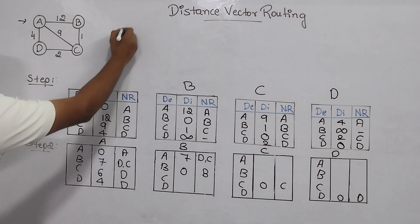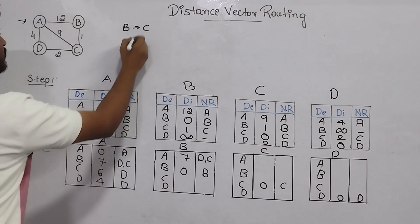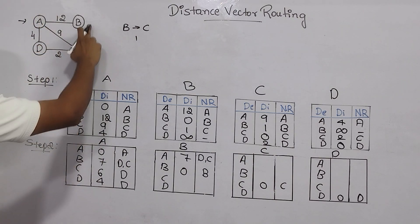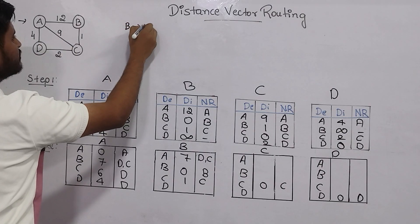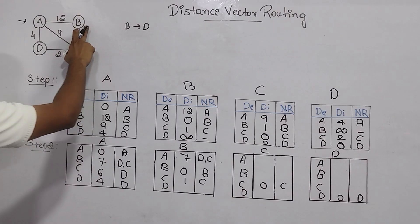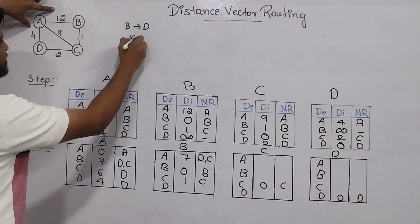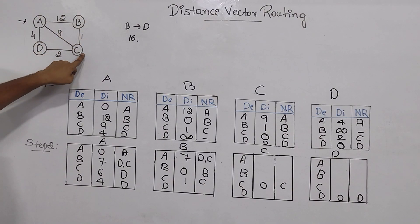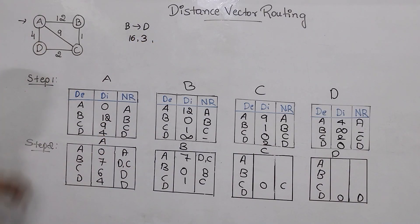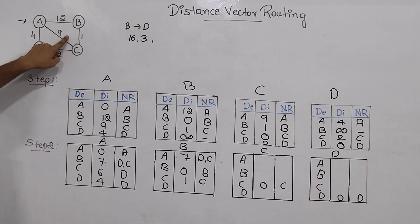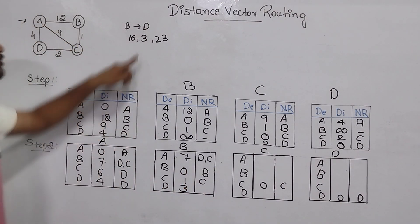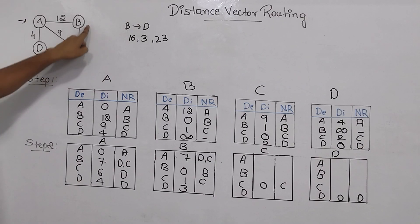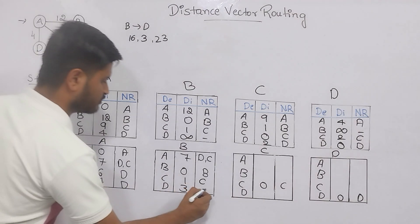From B, I must move to D. There is no direct edge. One path: B→A→D gives 12 + 4 = 16. Another: B→C→D gives 1 + 2 = 3. Another: B→A→C→D gives 12 + 9 + 2 = 23. Among 16, 3, and 23, the smallest is 3. To achieve distance 3, I used router C — from B I came to C, then C to D. So I write C as the next router.